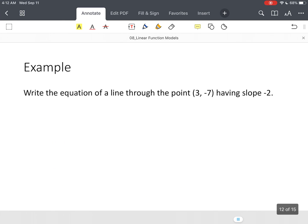So let's look at this example. It says write the equation of a line through a point (3, -7) having a slope of -2. Alright, so label everything.